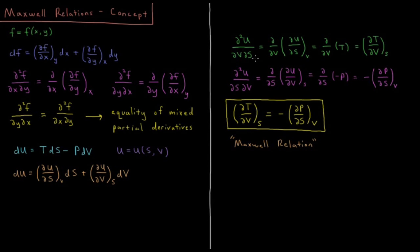Similarly, if we take the other order of operations for these derivatives, d²u/dSdV equals d/dS of du/dV at constant S. And du/dV we see here is minus P, so d/dS of minus P is minus dP/dS at constant V.